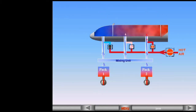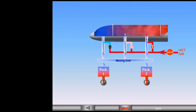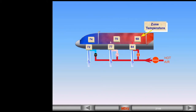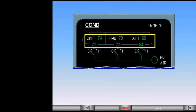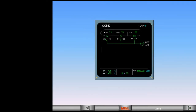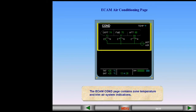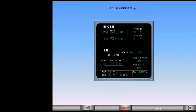The trim air valves and the hot air valve are controlled by the zone control computer. Zone duct temperature, which is the temperature of the air entering a zone, and the actual zone temperature are monitored by the zone control computer and presented on ECAM. The ECAM conditioning page contains zone temperature and trim air system indications. The ECAM cruise page also contains zone temperature indications.